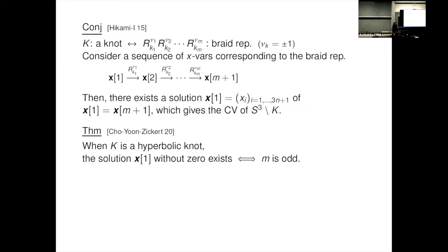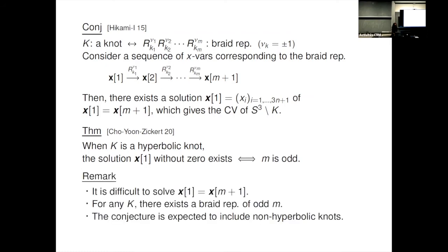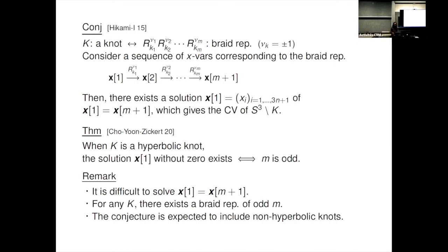I am very happy about this result. I'd like to remark a few things. It is difficult to solve this equation as I explained, but for their theorem, for any knot there exists a braid representation of odd length. We conjecture this also holds for non-hyperbolic knots because of numerical results. The hyperbolic case is solved and we hope to prove this conjecture also for the non-hyperbolic case, but I have no idea for now.